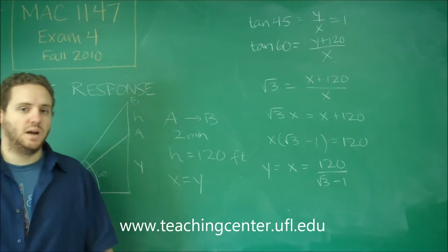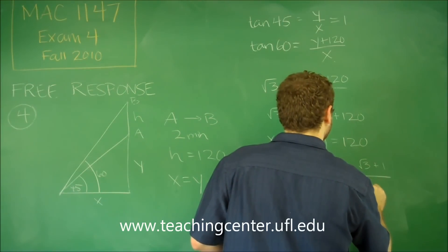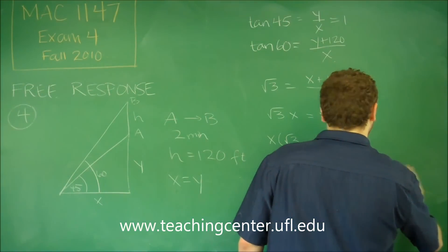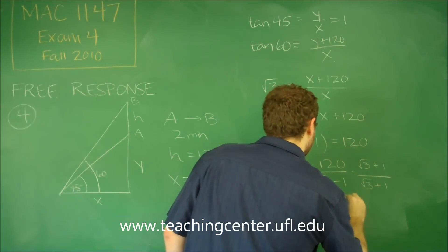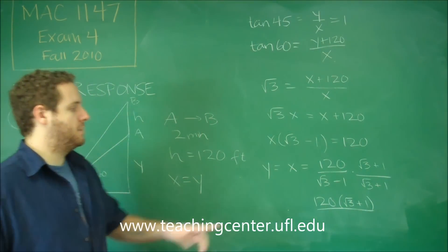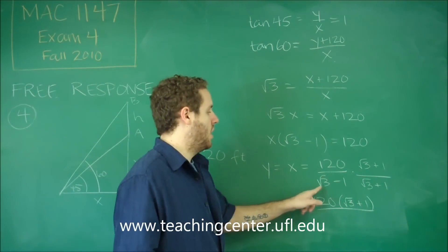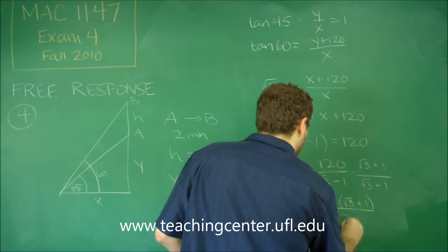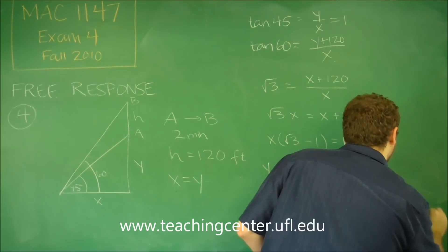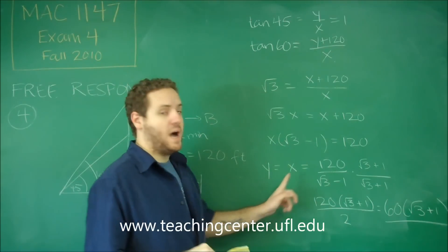All we need to do then is rationalize the denominator. So this would be multiplying by root 3 plus 1 over root 3 plus 1. So we'd have 120 times root 3 plus 1. We can leave that factored like that. At the bottom, difference of two squares, whenever you multiply by the conjugate, you always just get first one squared minus second one squared. We would get 3 minus 1 or 2. Finally, 120 and 2 can reduce to 60 root 3 plus 1. So that is the answer for both Y and X.